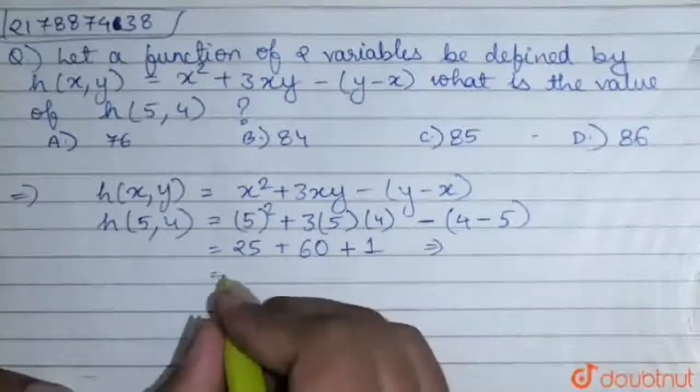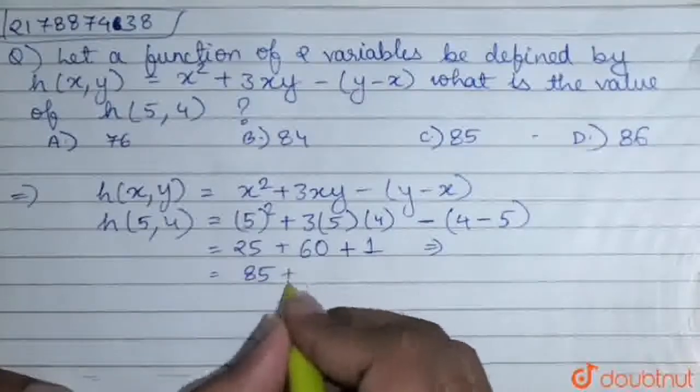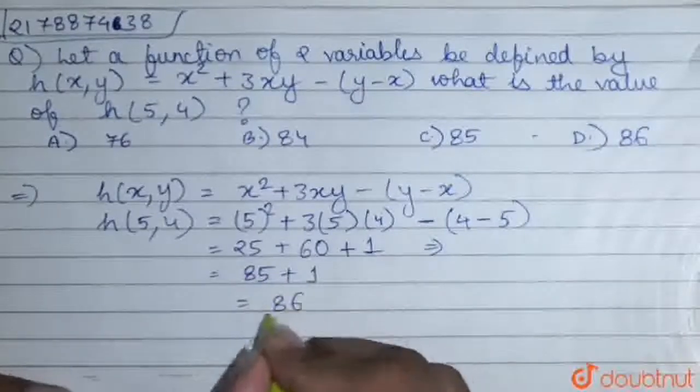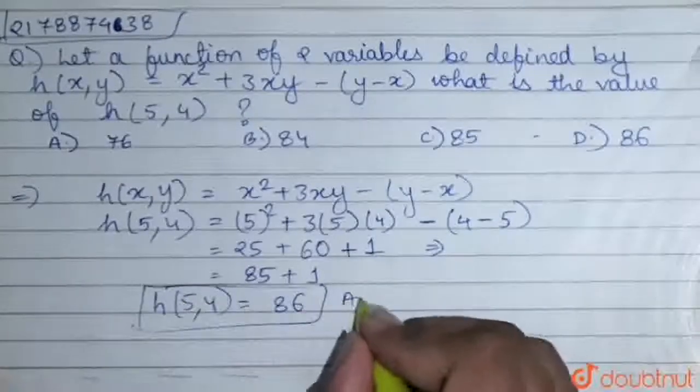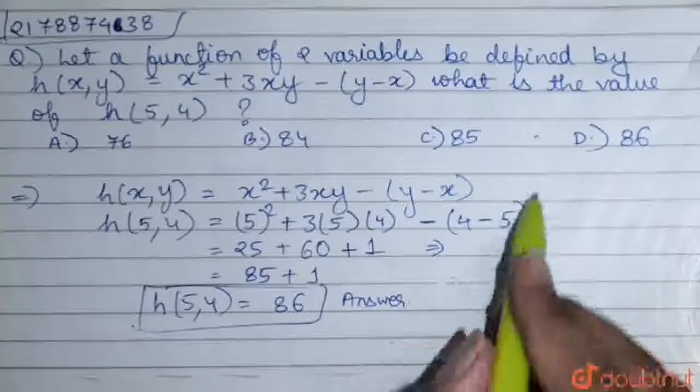So, this will be equal to 85 plus 1 that is 86. So, h of 5, 4 will be 86. This is our answer. And the correct option here is D.